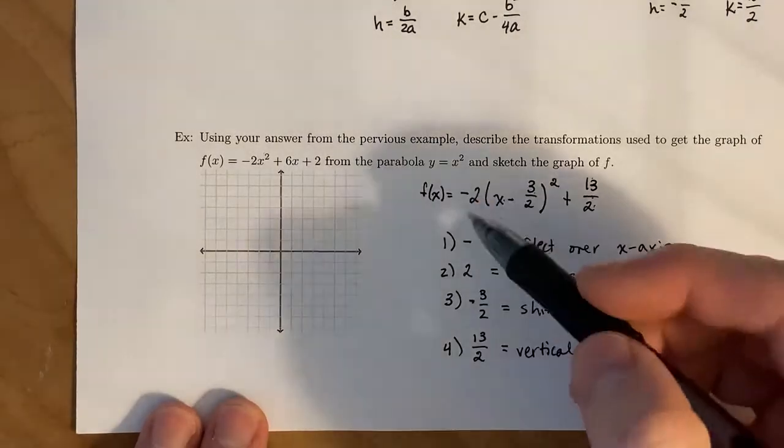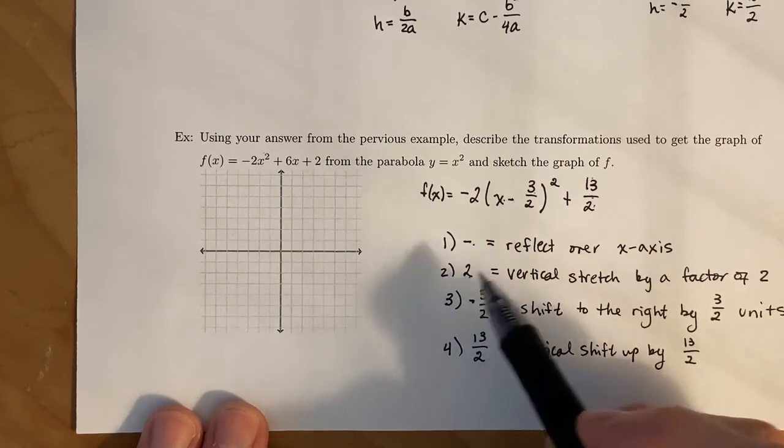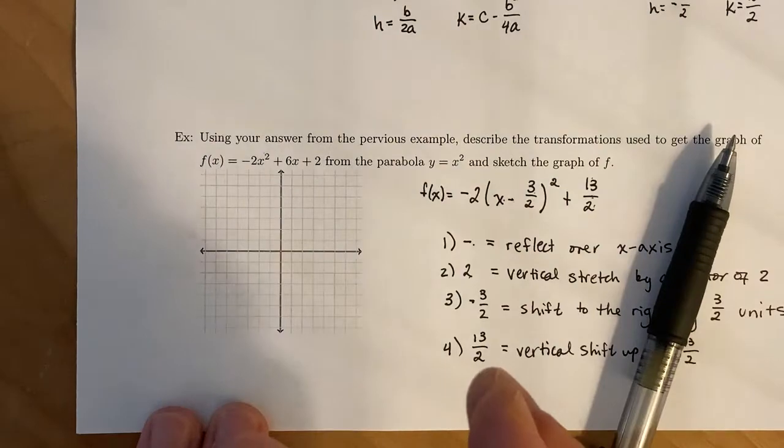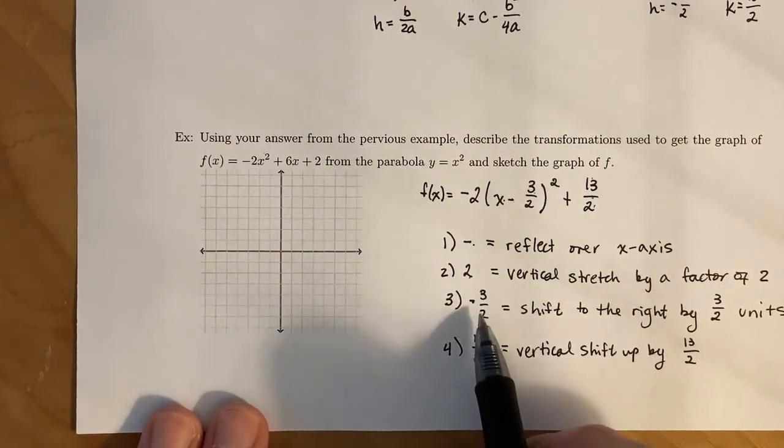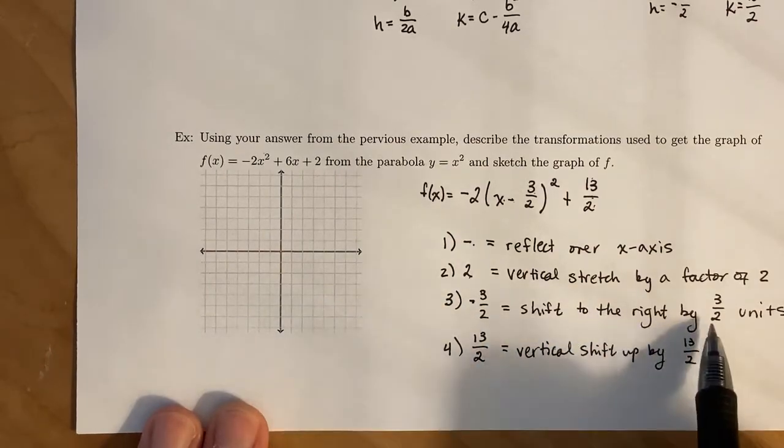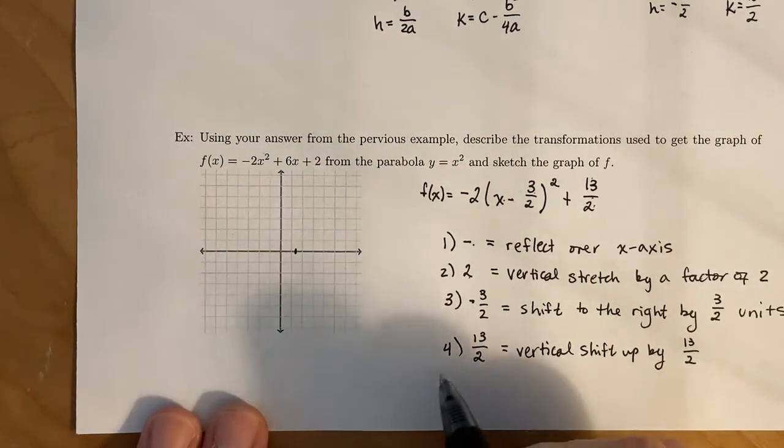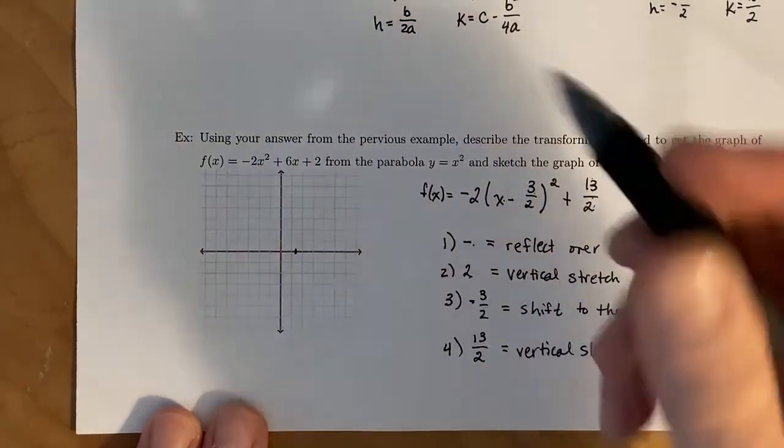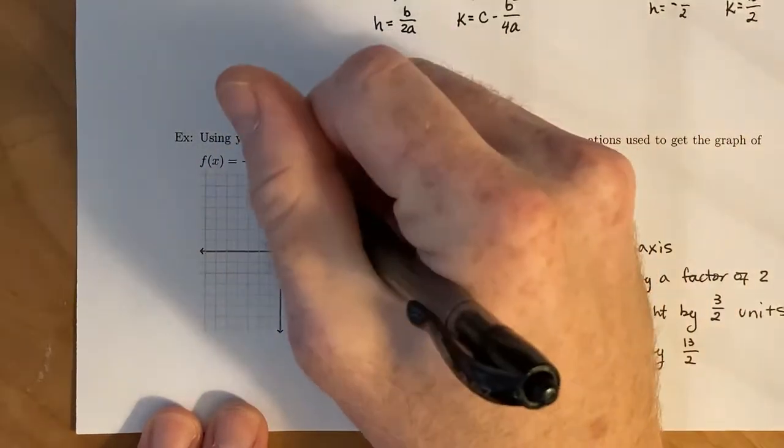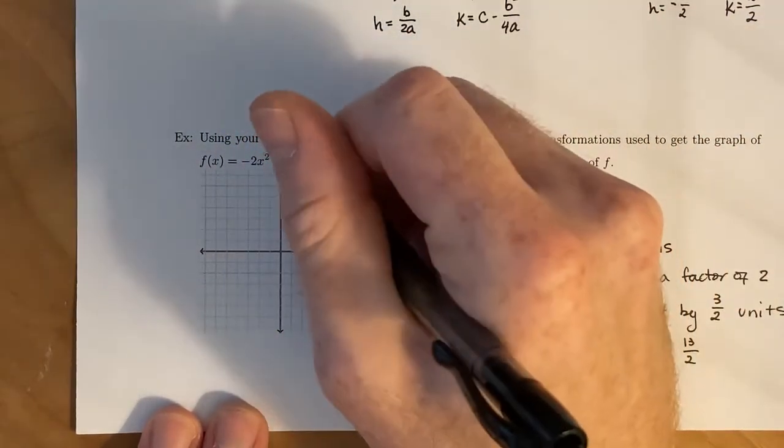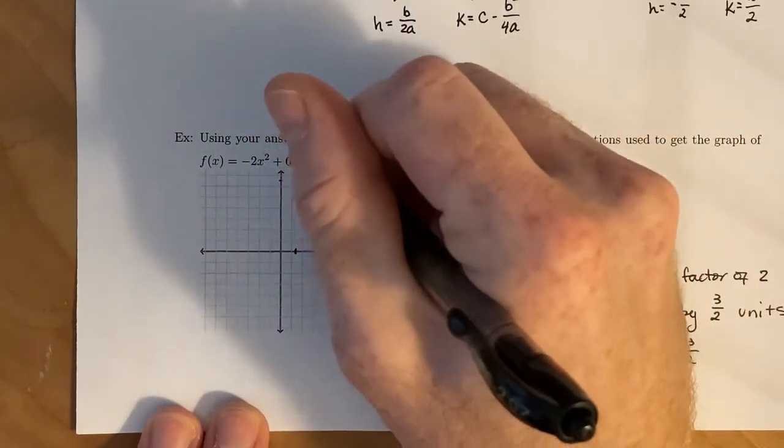All right, now we can piece this all together. So we know that we're looking at a frowny face. We know that we're looking at a parabola that's a little bit more squeezed in or condensed than your typical parabola. And we know where the vertex is going to be, because we're going to shift to the right 3/2 units. So that brings us to 1.5. And we're also shifting it up by 13/2, which is 6.5. 1, 2, 3, 4, 5, 6. So right here is going to be our vertex. This is 3/2, 13/2.